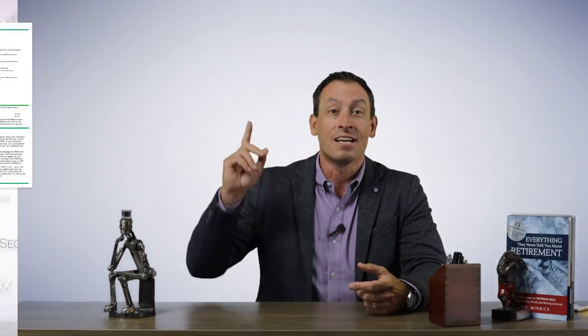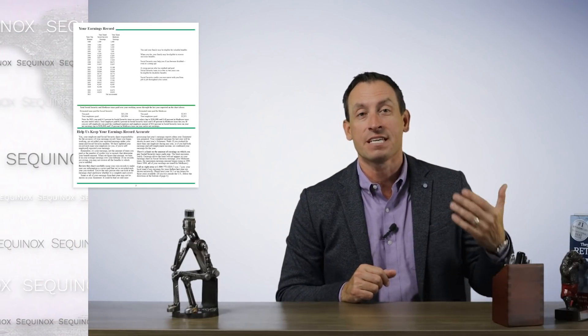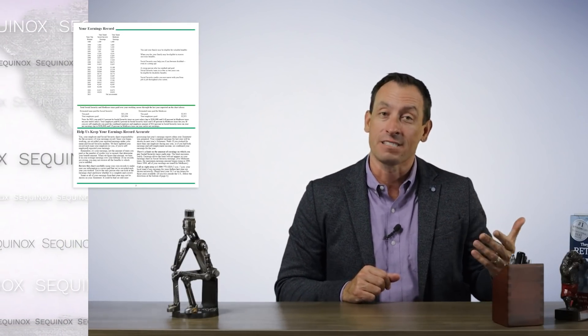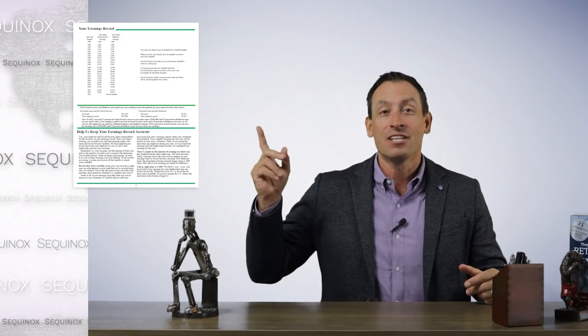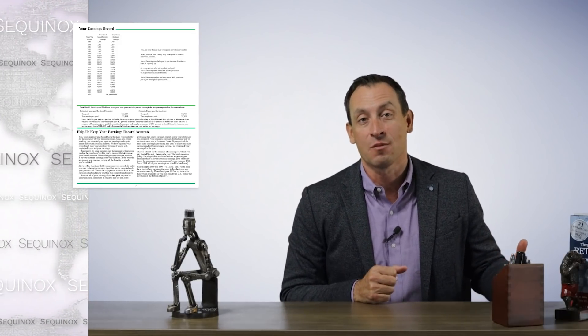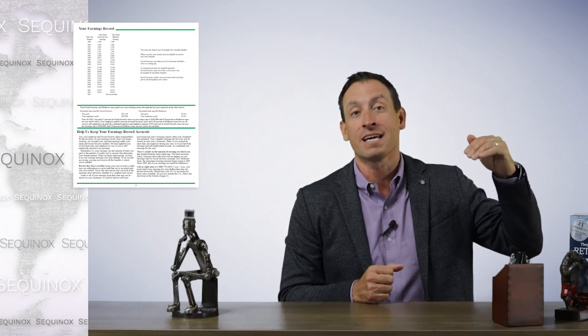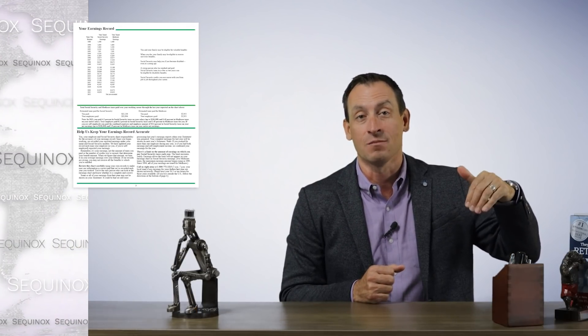Our first strategy is simply: check your earnings report. Go online to Social Security, log into your account and order a copy of your earnings report. You should do this each and every year and check it for accuracy. Then you want to start counting numbers — you're trying to get 35 numbers. Any zeros in there are going to bring down your income.